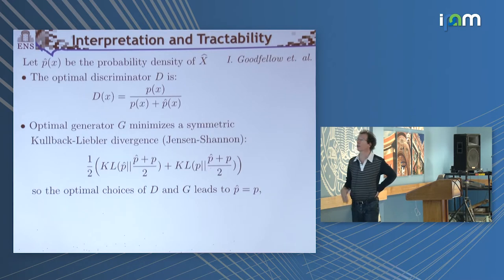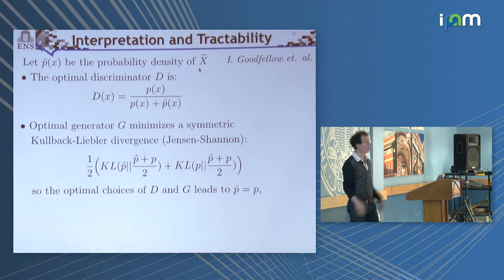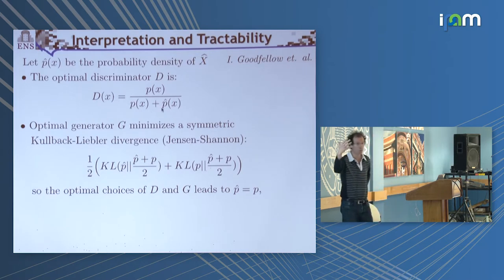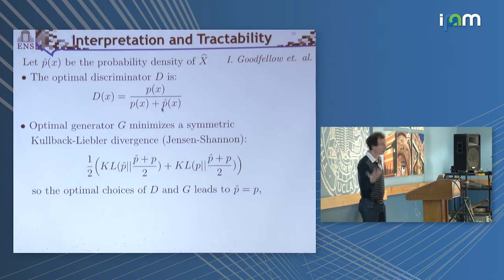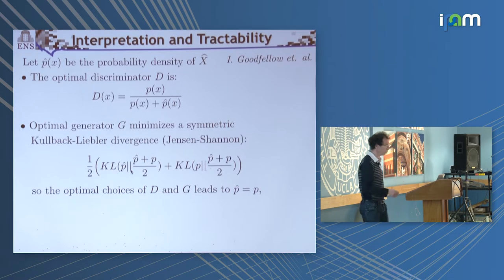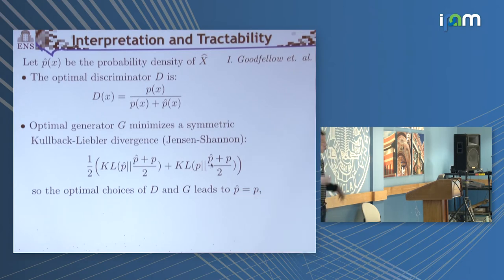The argument of Ian Goodfellow and collaborators is that this should work because if you look at the probability distribution describing the resulting generative process, the optimal discriminator is going to be defined by the ratio of the probability distribution divided by the sum of the two, if you've been able to learn an optimal discriminator. Given that, if you then try to optimize the generator, you will see that the cost function basically minimizes a Kullback distance — a kind of symmetrized Kullback divergence — between the estimated probability distribution and the average of the two. If you minimize that, it leads to convergence to the right probability distribution P. Wonderful.